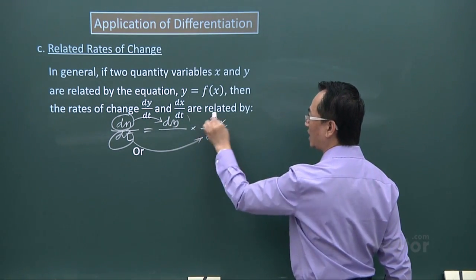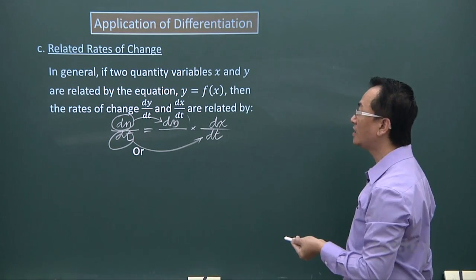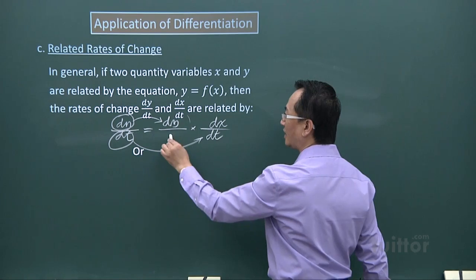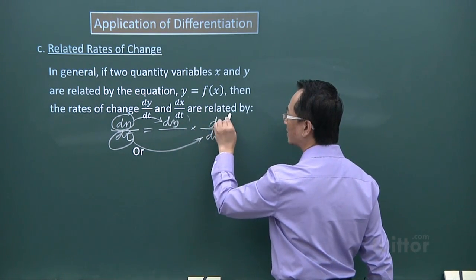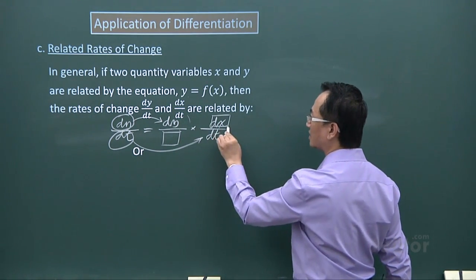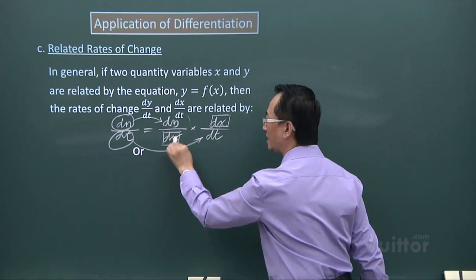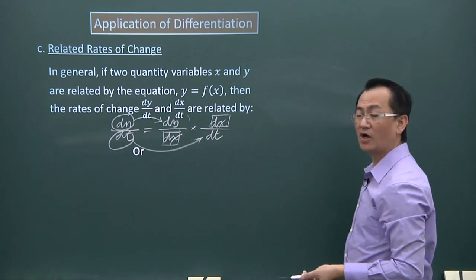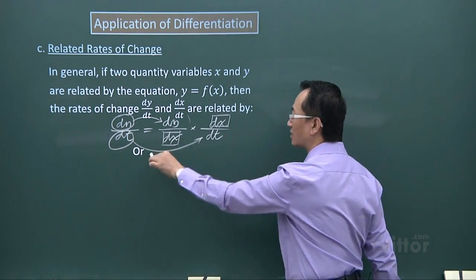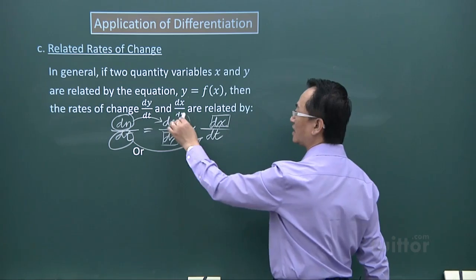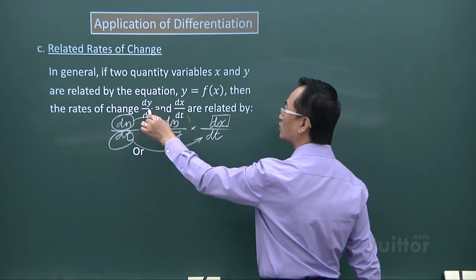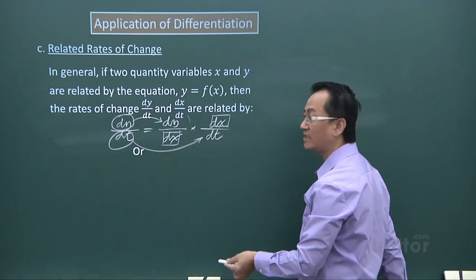Here I like us to see this carefully. Whatever I box here, dx, that will also be dx. Of course this is a symbol which cannot be cancelled off. This is your normal dy/dx. So these two rates are related in this way.